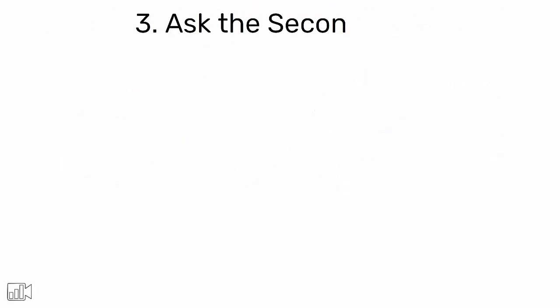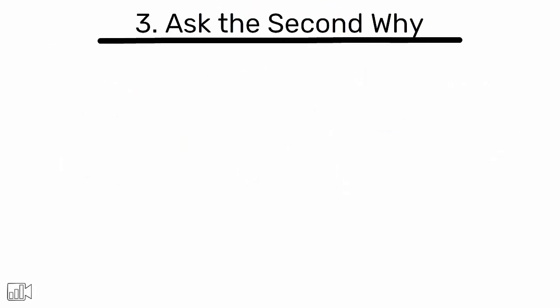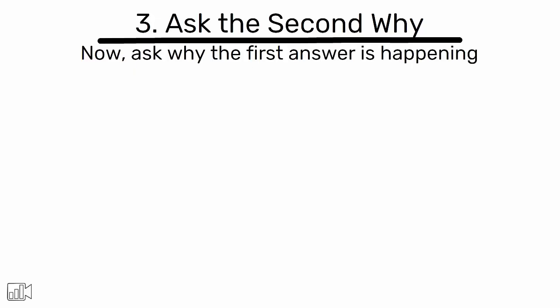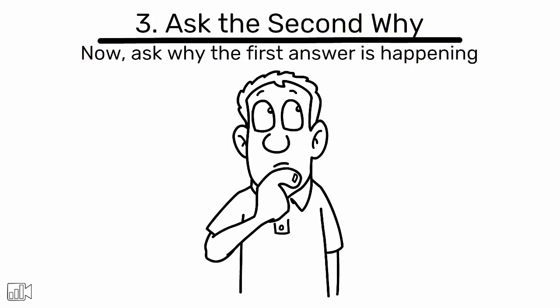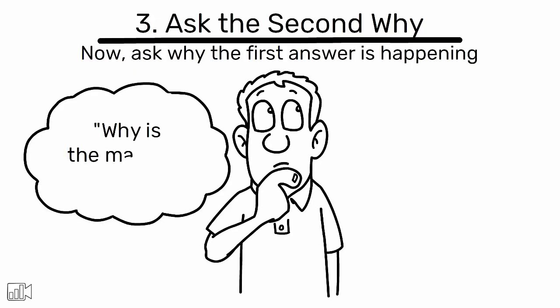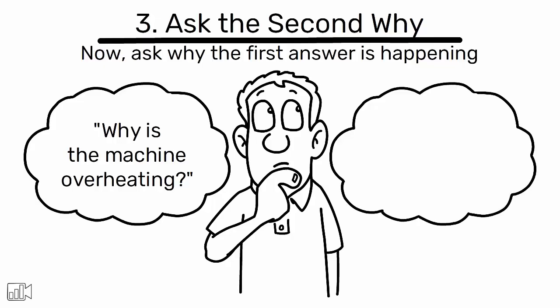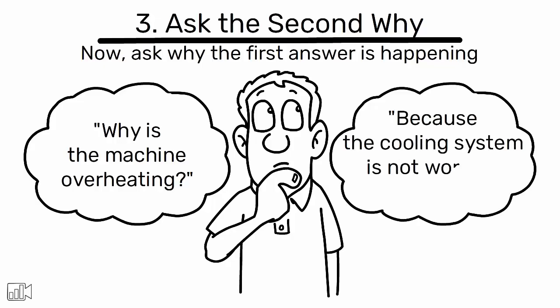Step 3: Ask the second why. Now ask why the first answer is happening. For example, why is the machine overheating? The answer could be because the cooling system is not working properly.